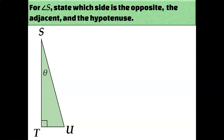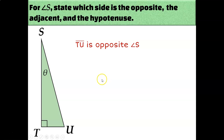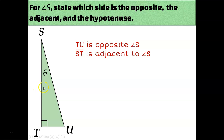Let's try another one. This time we're focusing on angle S, labeled with a theta. The side opposite from theta is side TU. The side adjacent to theta is ST because it's right next to angle theta and creates angle S. The other side that creates angle S is the hypotenuse — the side across the triangle from the right angle — which is SU.